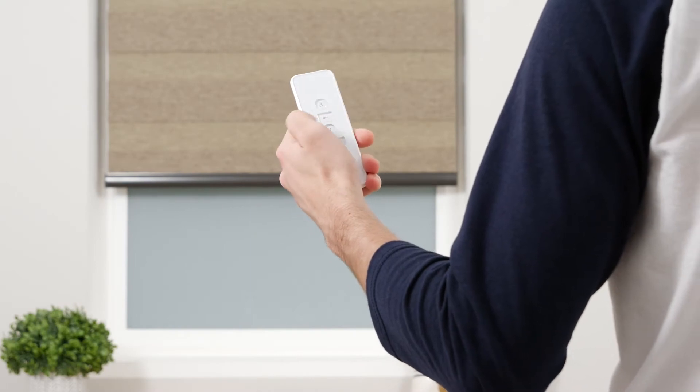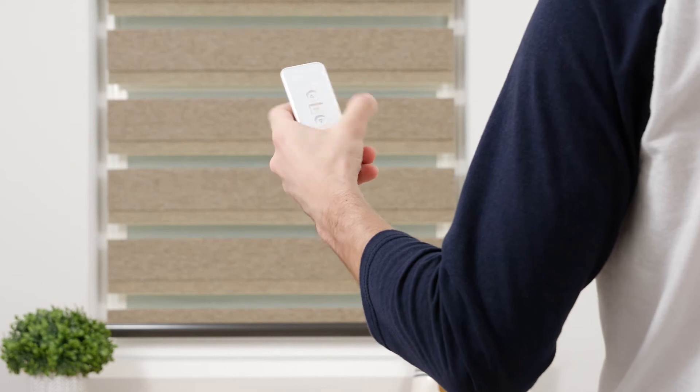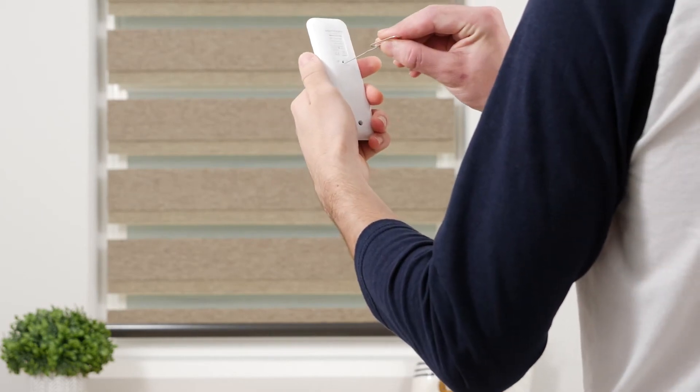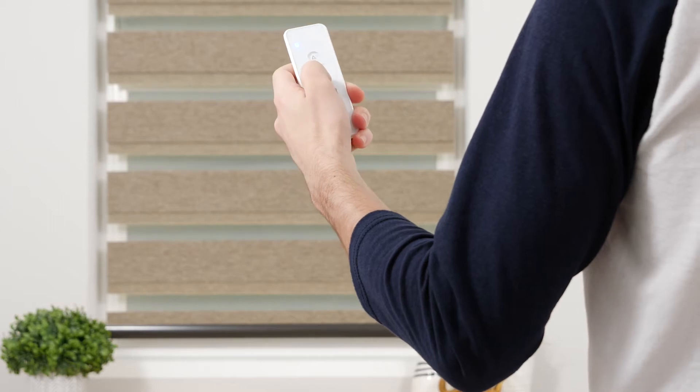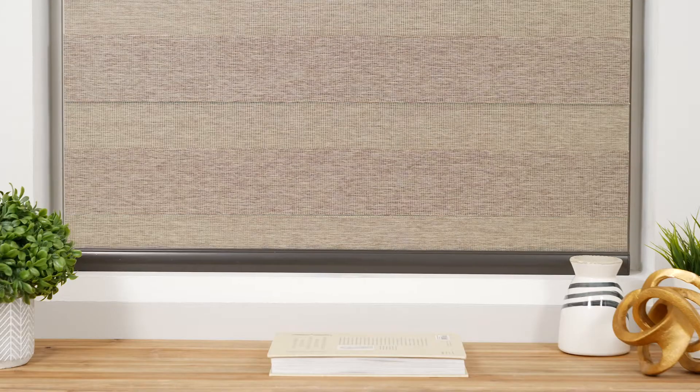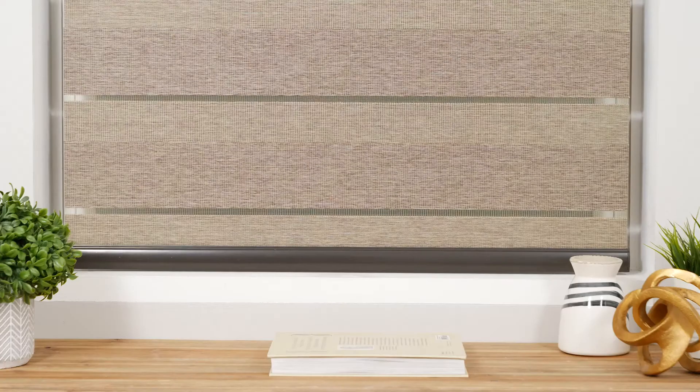Press the down button to lower the shade to the bottom limit. Press the program button on the back of your remote and the shade will jog to indicate that it is now in limit setting mode. Adjust the shade until you're satisfied with the new bottom limit. Press the program button again and the shade will jog to confirm that your lower limit is now saved.